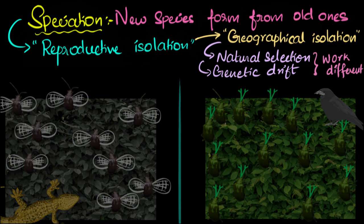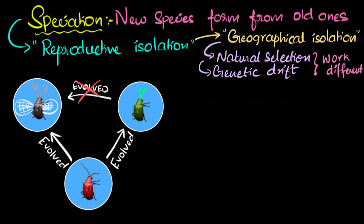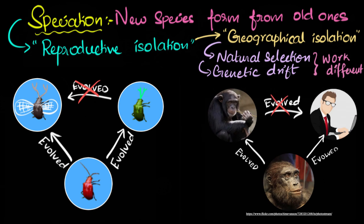We can now say these two species of beetles evolved from one common ancestor — the red beetles. It would be wrong to say one evolved from the other; both evolved from one particular species. In a similar manner, humans and apes evolved from one ancestral species. Things were definitely more complicated than described here, but this took about seven to eight million years, and there may have been even more species and speciations in between. But you get the overall picture of how new species are formed.